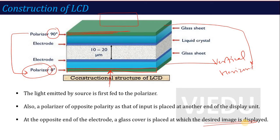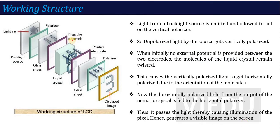Now let's see how it is working. Here is the working structure of this LCD. There is a polarizer, a glass sheet, a liquid crystal, both electrodes — negative and positive — a glass sheet, and a polarizer. Your light ray is incident on the input side from the light source, and at the output end you place the display image where the glass cover is and your image is displayed.